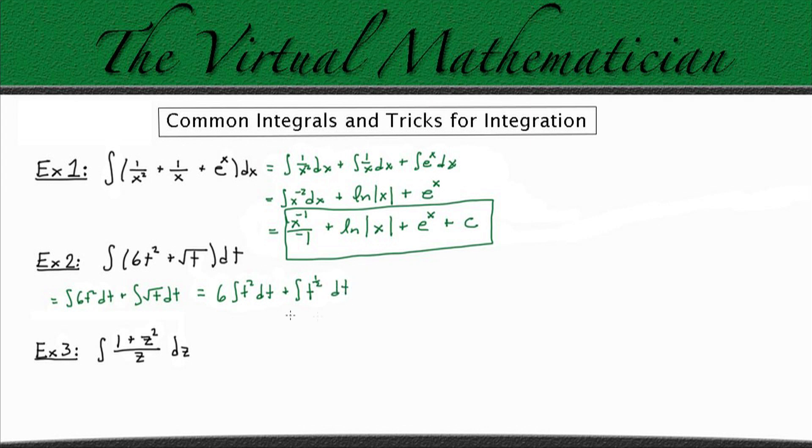Now, these integrals become very easy. We can evaluate them both using a power rule. We know the power rule says to take our function, raise it to the same power plus 1 over the new power. So for the first integral here, we're going to get 6 times t cubed over 3. And then for the second one, we're going to get t to the 1 half plus 1, so that's going to be to the 3 halves power divided by 3 halves and plus c to keep things general.